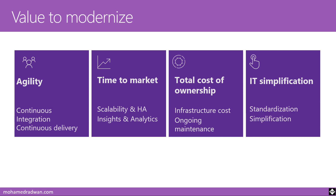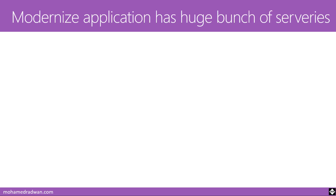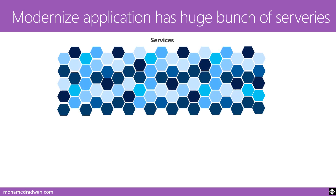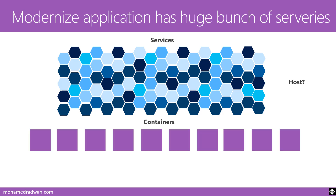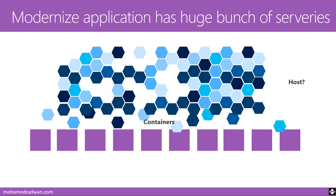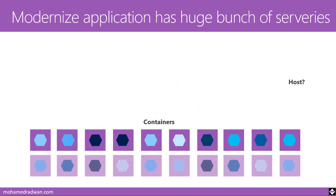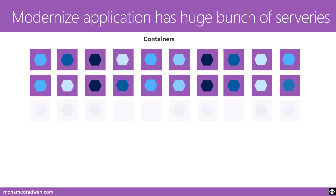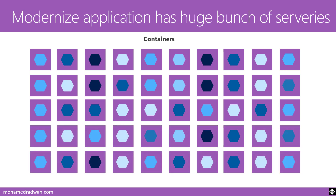A modernized application has a large number of services — registration, customer, order services, and many more. The question becomes how to host these services. One high-potential option is hosting in containers, where each service goes into a container. You end up with a large number of microservices deployed to many containers, which provides team autonomy and fast delivery to market, but it also increases the complexity of managing all these containers and services.